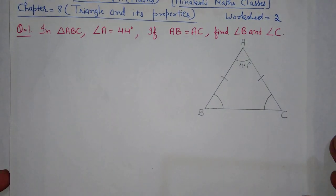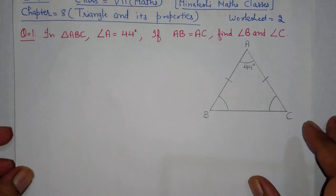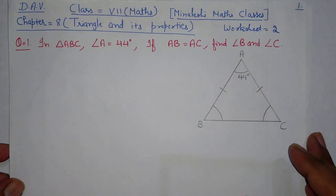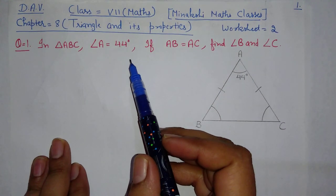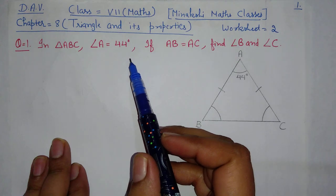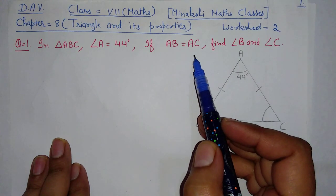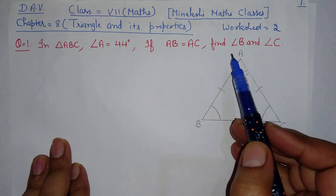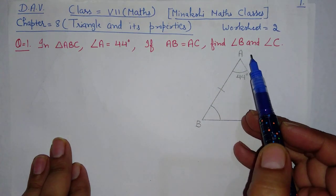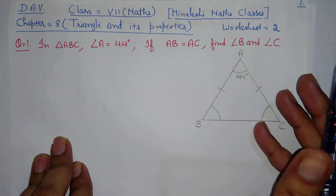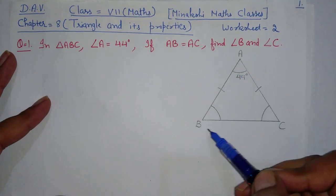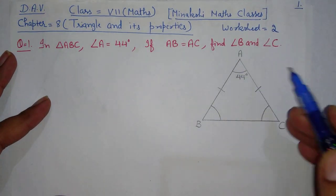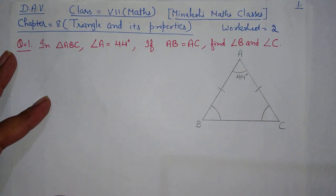Question number 1: in triangle ABC, angle A is equal to 44 degrees. If AB is equal to AC, find angle B and angle C. They said 'in triangle ABC' — a triangle ABC is given, so I drew it here on my own.